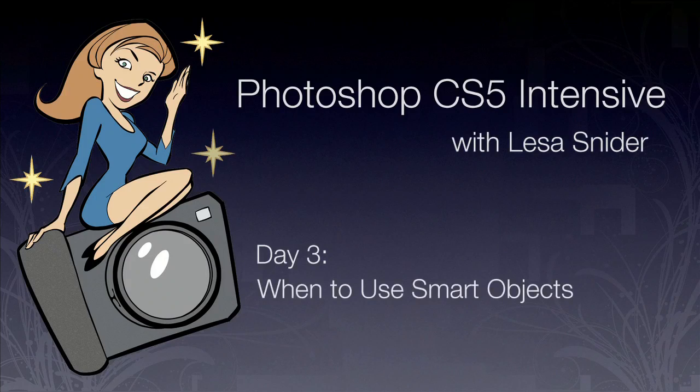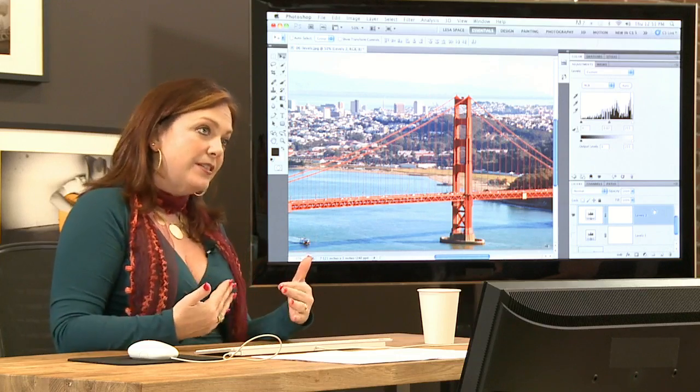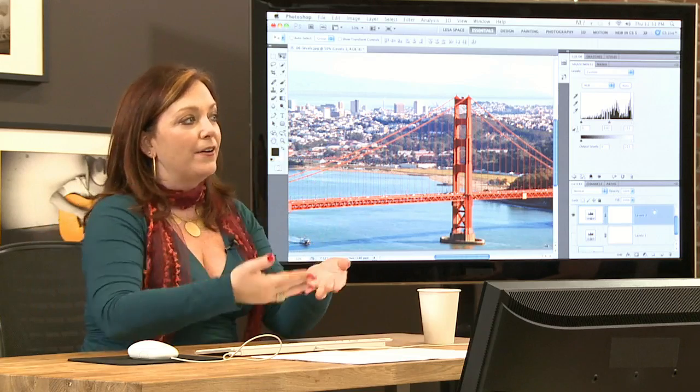A lot of people in the chat room have been asking this question all morning, so we thought it'd be great to just get it out of the way: when do you use smart objects versus not? The general rule is why should I use it at one point and why should I not? Great question. The reason we didn't use a smart object for this particular levels adjustment is because we can make the levels adjustment run as an adjustment layer.